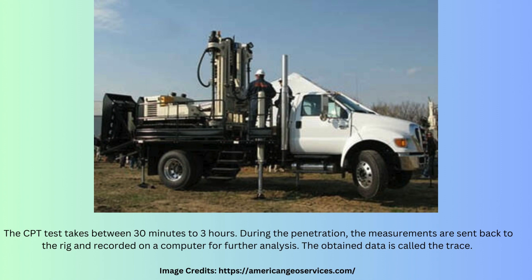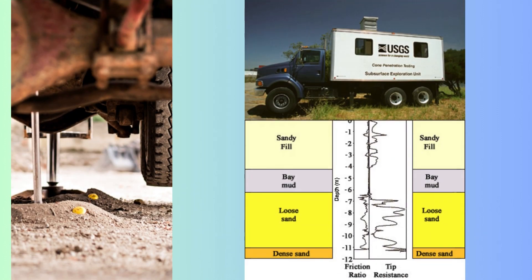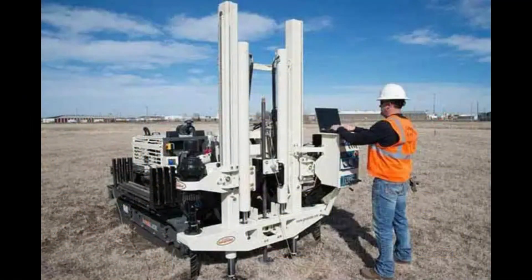The obtained data is called a trace. Geotechnical engineering specialists utilize the CPT test to comprehend soil properties including relative density and soil behaviour type. These properties are determined from the cone tip resistance as well as sleeve friction. Additionally, the results help to predict how the ground will respond to various levels of earthquake shaking.